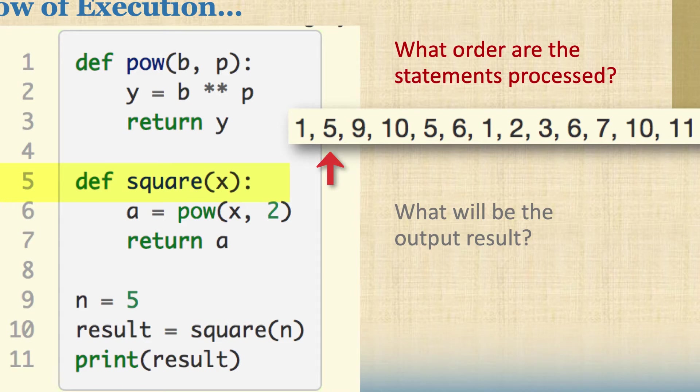And it's going to say, oh there's a function definition called square and it's looking for one value. And then it's going to jump down to 9. It's not going to run anything in the function yet because it didn't get a function call yet. Then it's going to run down to line 9 and say, oh n equals 5.